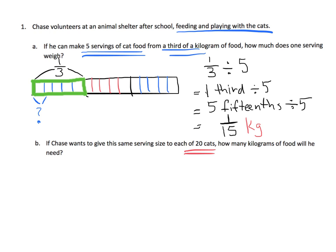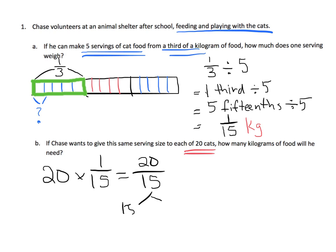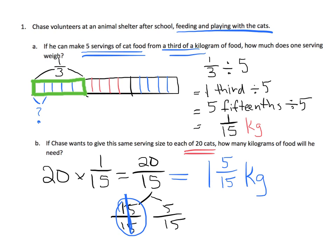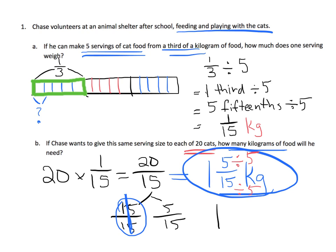So we're going to have 20 copies of that 1 fifteenth, so we're going to multiply. That gives us 20 fifteenths, which we can change to 15 fifteenths and 5 fifteenths. That 15 fifteenths equals 1. So this is equal to 1 whole and 5 fifteenths kilograms. And if we simplify by dividing both the numerator and denominator by 5, we get 1 and 1 third kilograms.